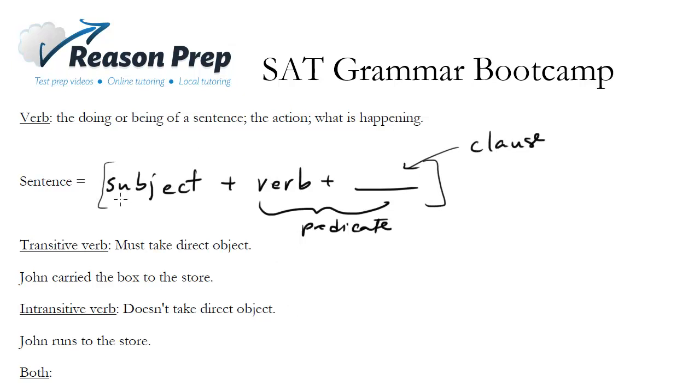So this is what a sentence is, it's a subject, which we just talked about, it's a noun that's doing or being the action, most of the time at least, and then it's a verb, what that subject is doing or what that subject is being. So that's a sentence, it's got to be a clause, so let's look at the kinds of verbs we might see.